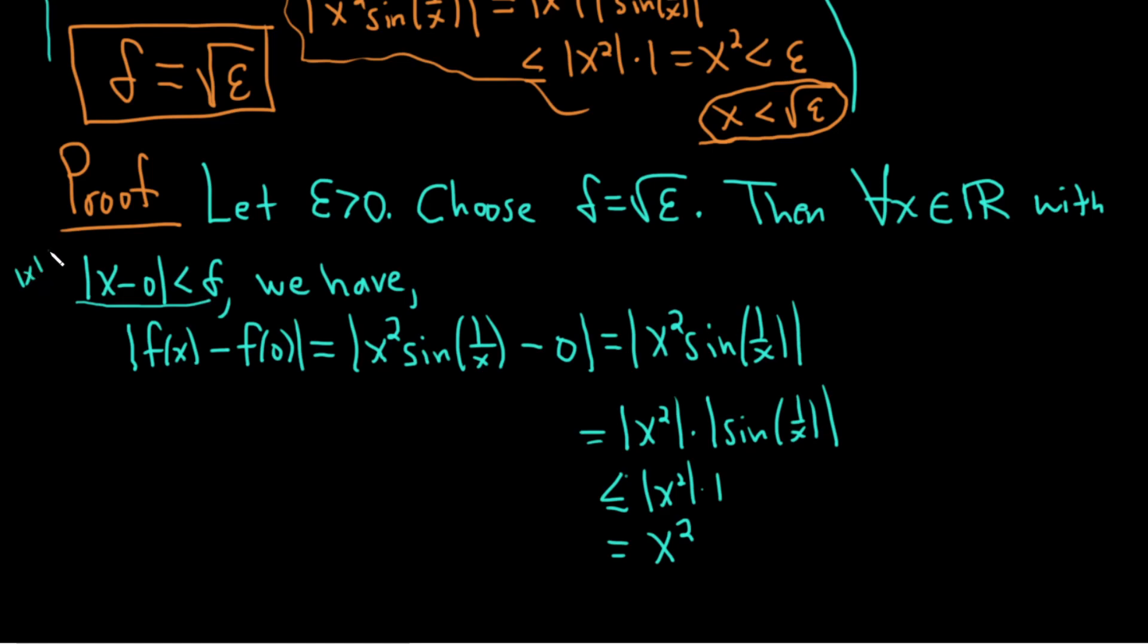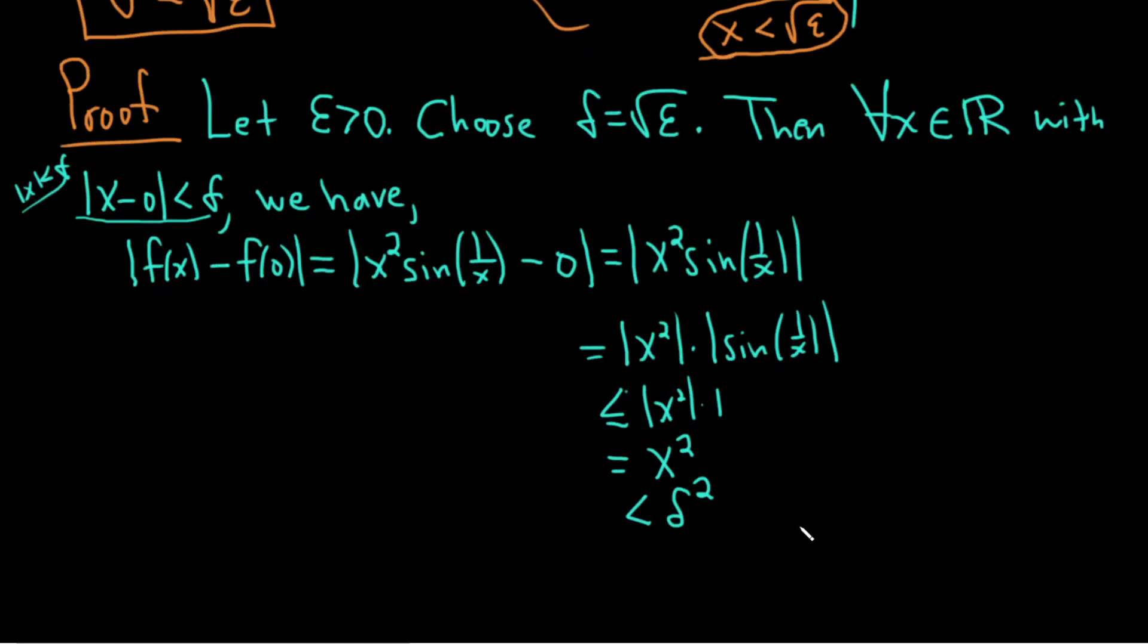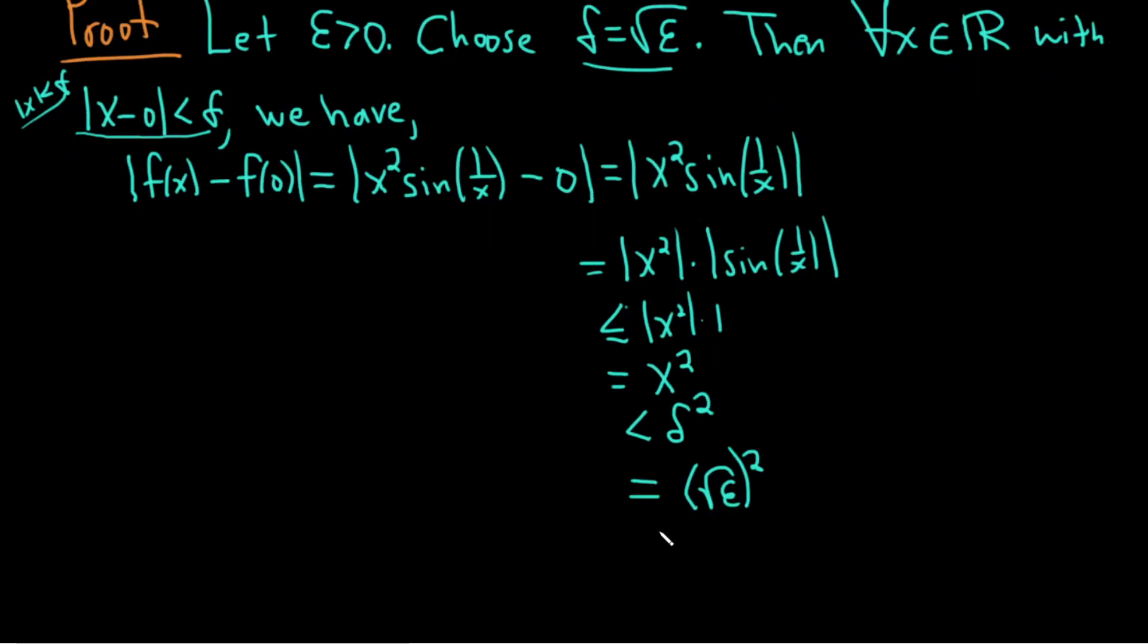And then because this is less than delta, this really means the absolute value of x is less than delta. So this is less than delta squared. Okay? But, but, but, delta is the square root of epsilon. So this is equal to the square root of epsilon squared. And that's equal to epsilon. And so that completes the proof.